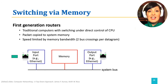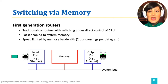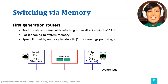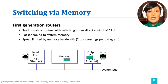Switching via memory is the oldest switching technology. It is used in the first generation of routers and is also in use in some modern routers. In these routers, the incoming packet informs the routing processor through an interrupt. The routing processor would copy the packet to the system's memory, extract the packet destination, look up the forwarding table, and copy the packet to the appropriate port accordingly.